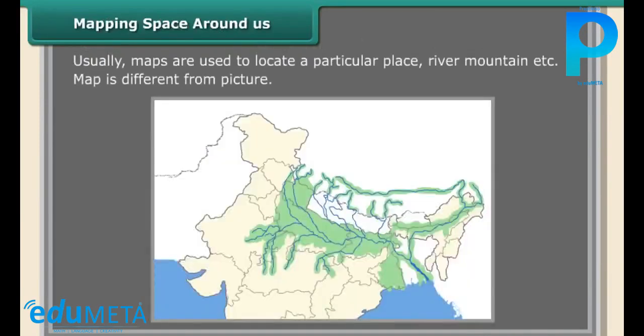Mapping space around us. Usually maps are used to locate a particular place, river, mountain, etc. A map is different from a picture. This map is drawn by Radha. In this map the route from her house to her uncle's house is shown. How far is Radha's house from her uncle's house? From this map it is very difficult to find which place is near Radha's house. We do not know the distance between circles, so there is lack of information.